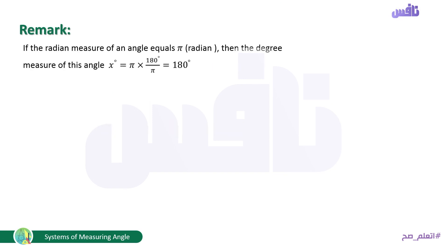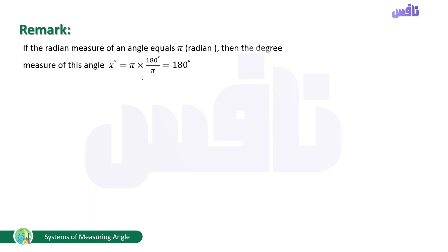Remark: if the radian measure of an angle equals π rad, then its degree measure equals x° = π × 180/π = 180°. So π rad = 180°. This is very useful for quick conversions.